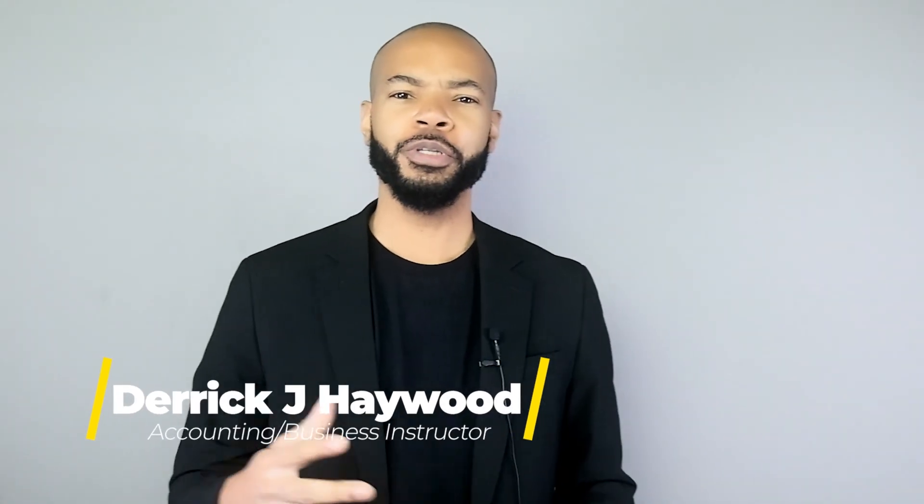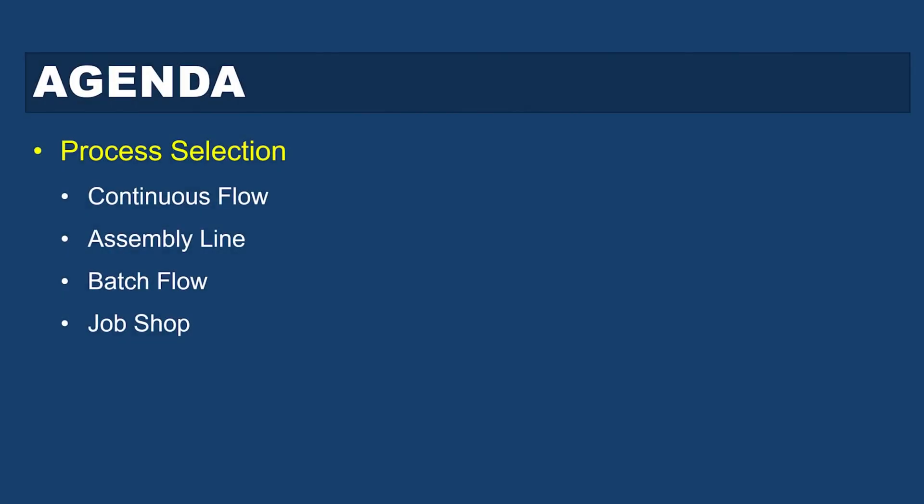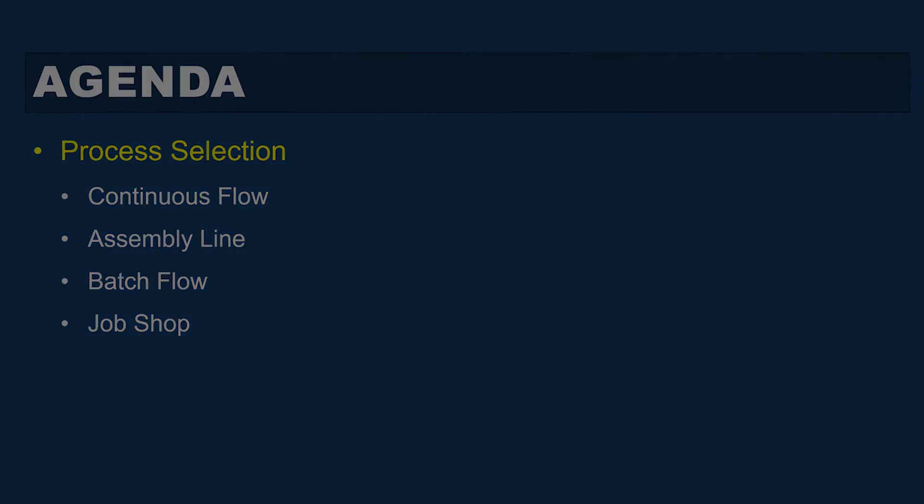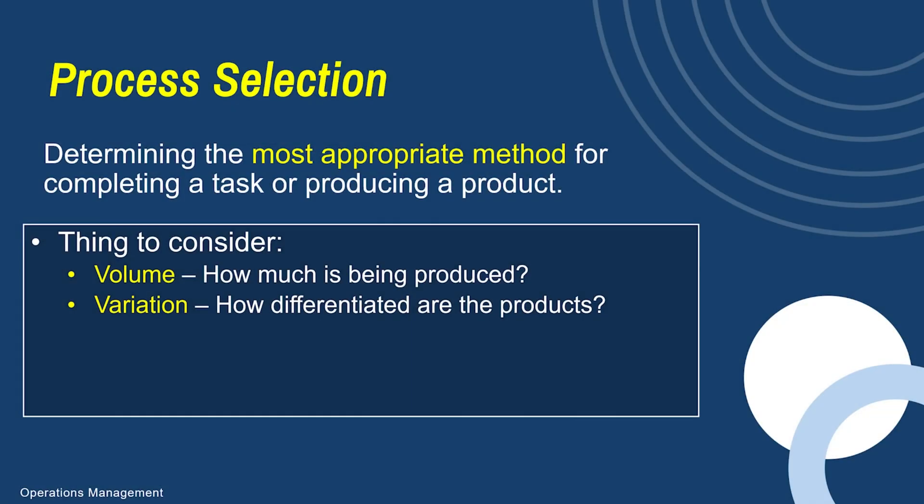You decided how much capacity you wanted, chose a location, determined whether you wanted a product or regional facility, and then designed that facility. Now it's time to choose the process of how you will produce your products. In this video, I will talk about four different types of process selections. When it comes to process selection, first going back to square one — what is it that you're producing? Your product or service is going to determine what your process selection should be.